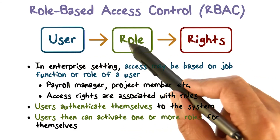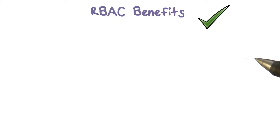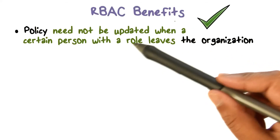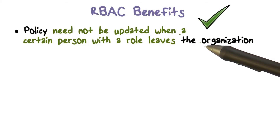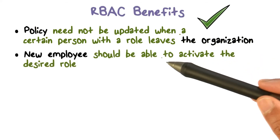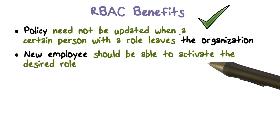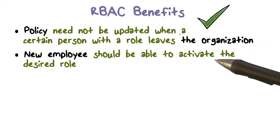There are two stages: activating a role for a user, and based on that, deciding what the user can access. There are benefits to role-based access control. The policy defines what roles have what kind of access to resources, so the policy doesn't need to change when a person leaves the organization. Policy is associated with roles, not users, so users coming or going don't require changes to the organizational policy. When a new employee comes in, we simply decide what role is appropriate, and resource access happens automatically based on that role's access rights.